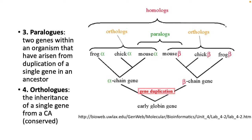Paralogs are two genes within an organism that arose from duplication of a single gene in an ancestor. Orthologs are genes inherited from a single common ancestor that are conserved across species. Looking at the globin gene — alpha and beta types — after gene duplication, one side represents an ortholog and the other side also an ortholog. But comparing alpha globin versus beta globin both within mice is considered a paralog.